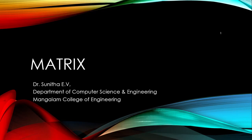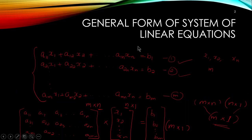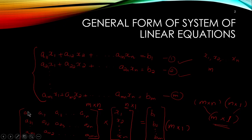The next topic in this course is matrix — how we can represent linear equations using matrix representation. First, we look at the general form of a system of linear equations: a11*x1 + a12*x2 + ... + a1n*xn = b1, and so on. We have m equations, with the last being am1*x1 + am2*x2 + ... + amn*xn = bm. We take all the coefficients and form the coefficient matrix.